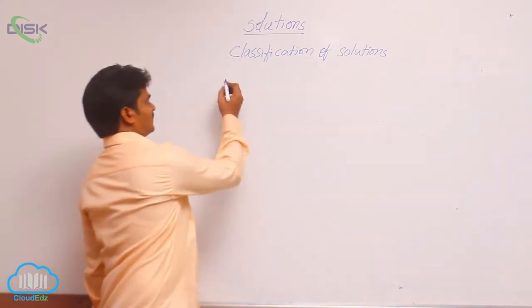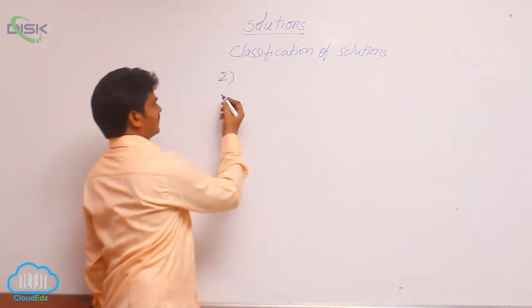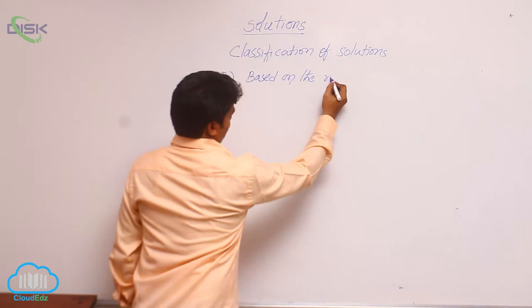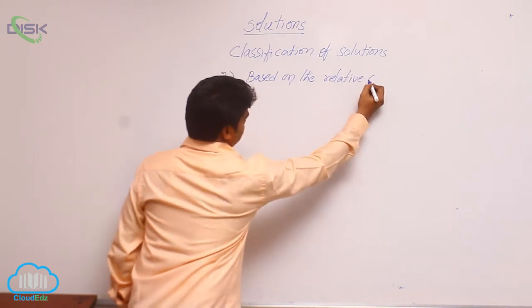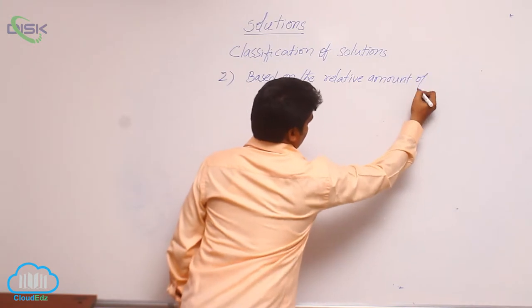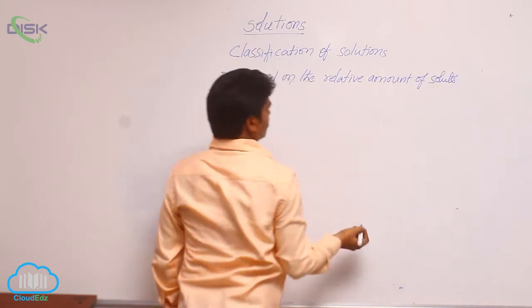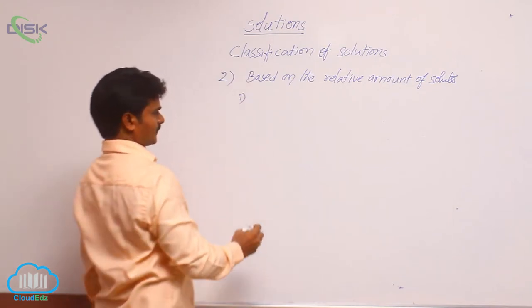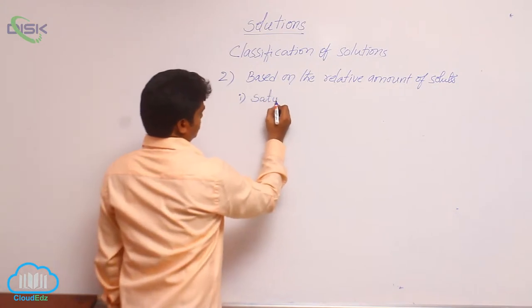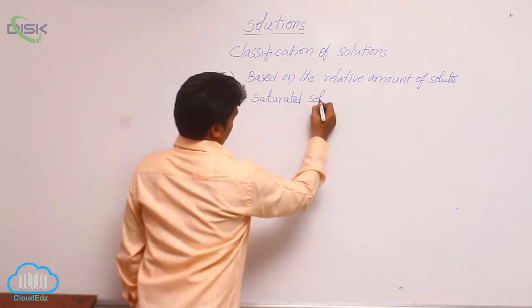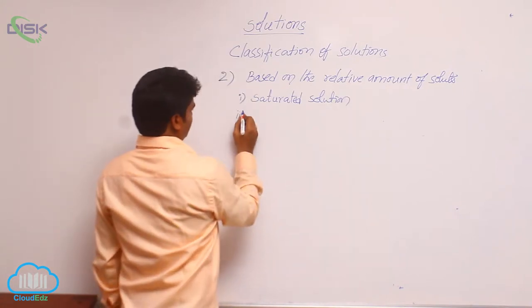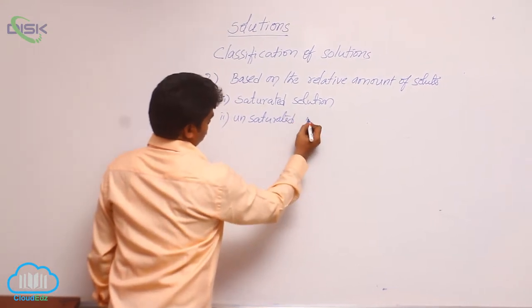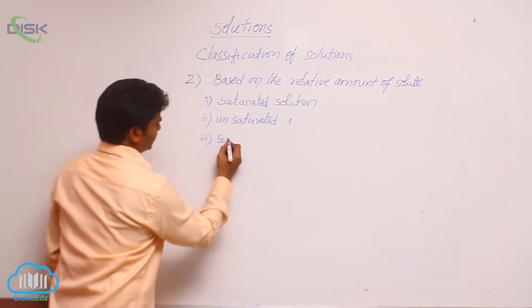Let us see the second type of solutions. It is based on the relative amount of solute. In this category, there are three types: one is saturated solution, second one is unsaturated solution, and third one is supersaturated solution.